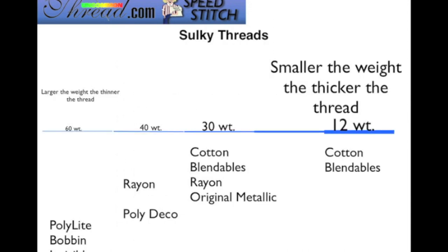This is a chart I created that shows the scale of the threads, starting with the lightweight thread on the left-hand side all the way up to the 12-weight thread, which is a heavier thread on the right-hand side. I have listed most all of the threads by their weight. The only two threads not shown are the hollow shimmer and the sliver, because they don't follow this weight scale — and that's an important concept to understand.